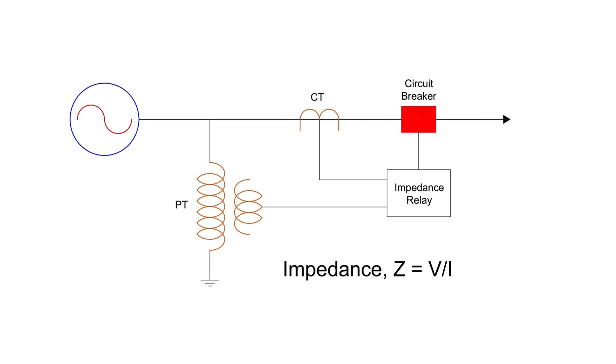Distance relays measure the apparent impedance from the relay's location to a fault. This is done by dividing the voltage at the relay point by the measured current. Z = V / I. If the measured impedance is less than the relay's preset value, the relay interprets this as a fault and sends a trip command to the breaker. The relay can operate directly or through a master trip relay for multipole tripping.